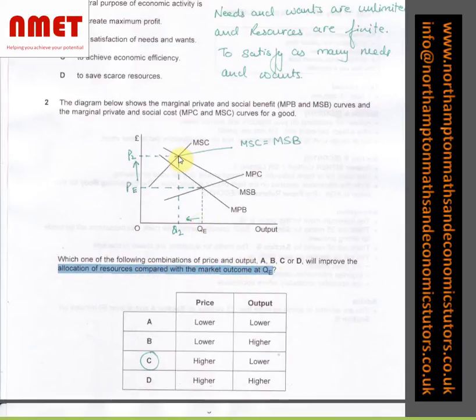What we are saying is that's the point where the market price internalizes all externalities. We can see that the price PE has gone to P2 and the QE has decreased to Q2. So higher price and lower output which would be option C.